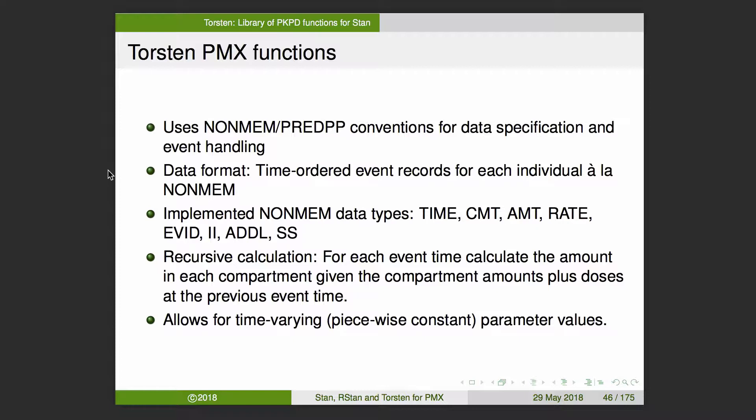Those Torsten functions use NONMEM PREDPP conventions for data specification and handling events. The data format is a set of time-ordered event records for each individual, much like NONMEM. The implemented NONMEM data types include time, compartment, amount, rate, EVID, II, ADDL, and SS. It uses recursive calculations under the hood, much like PREDPP, which allows for time-varying parameter values in the sense of piecewise constant.